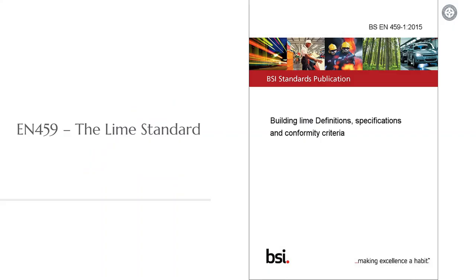The first standard that anybody's going to think of when you talk about lime is going to be the lime standard itself, EN459. This standard is split into several parts, the first part being the specifications and conformity criteria. This is the section of the standard where it breaks down the types of lime that you can put on the market and the test methods that you need in order to QA your product. The other parts of the standard are usually the test methods, which are for the aforementioned types of lime.